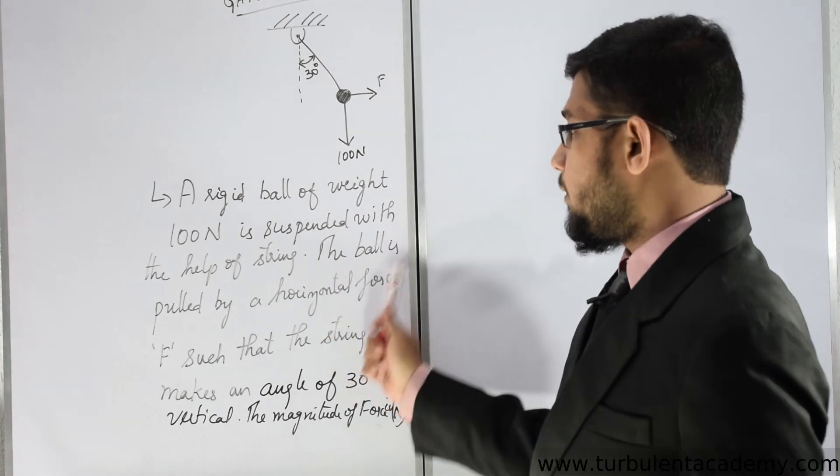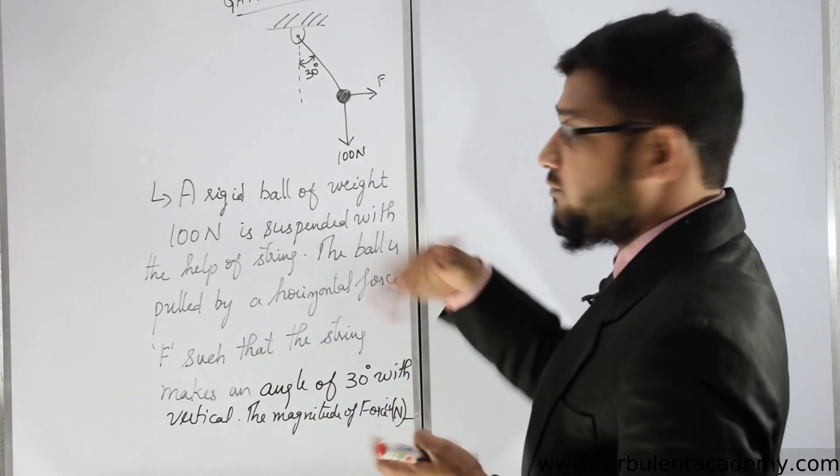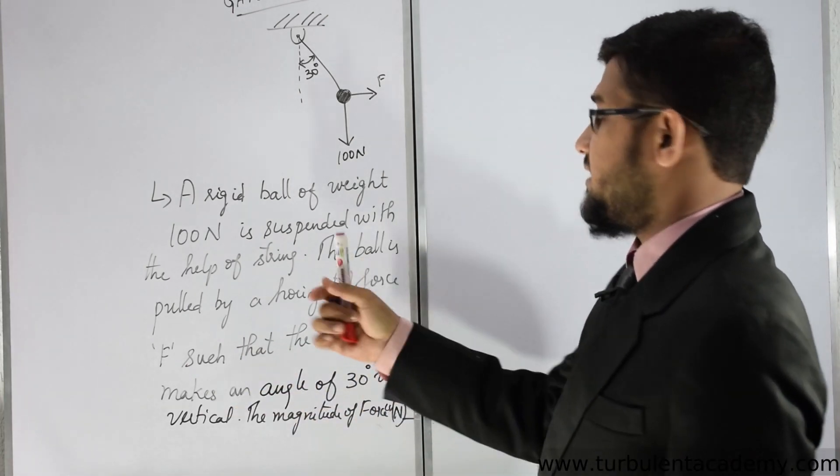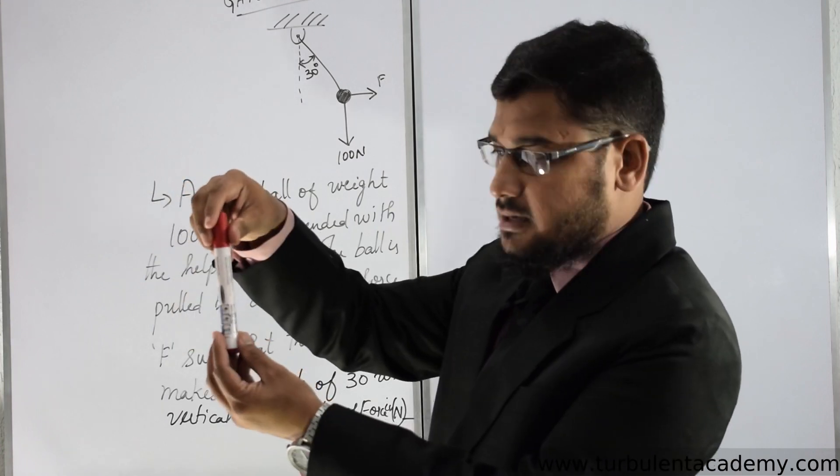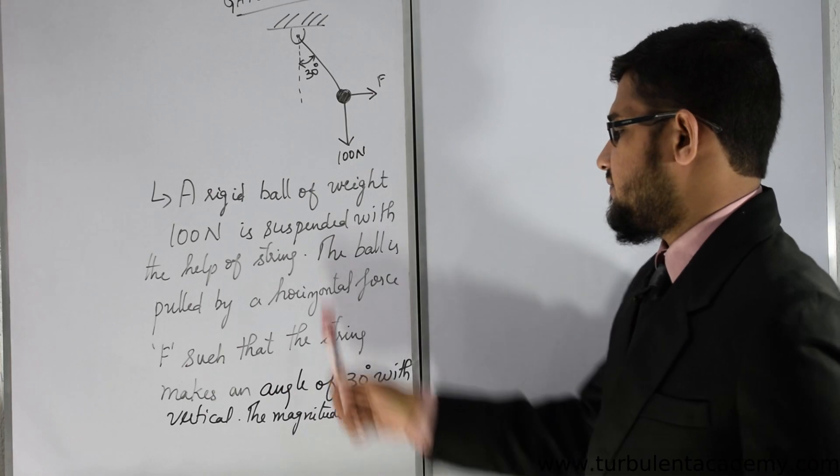The ball is pulled by a horizontal force F. Someone is going to push it such that the string makes an angle of 30 degrees. It's hanging like this, we have a ball, someone is pushing it like this. This makes 30 degrees with the vertical.